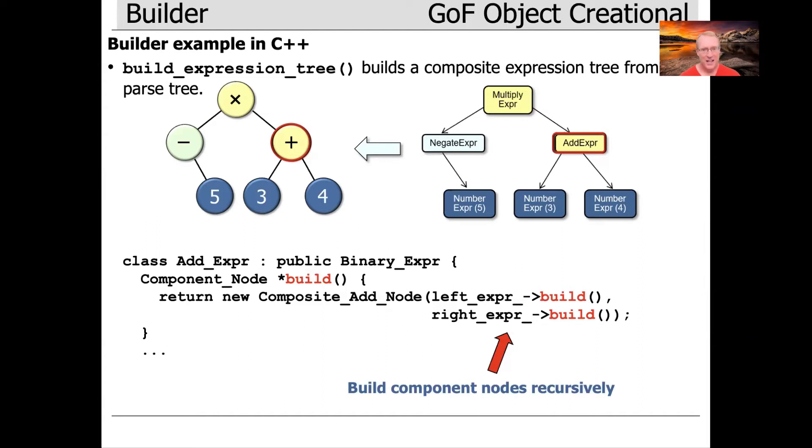are left expert arrow build and right expert arrow build. So that again recursively calls build, which will then descend even further, as we'll see in a moment.